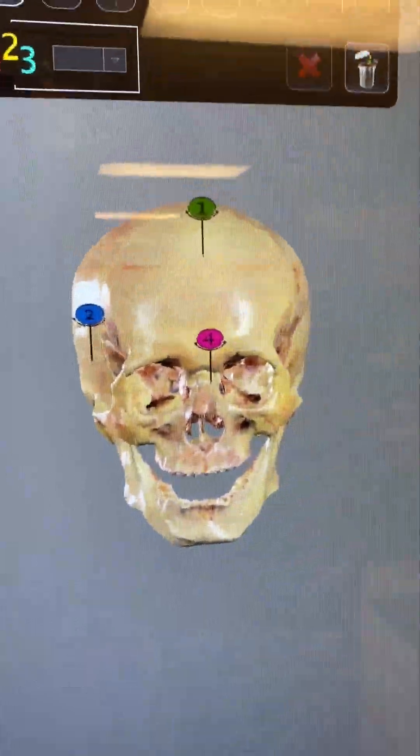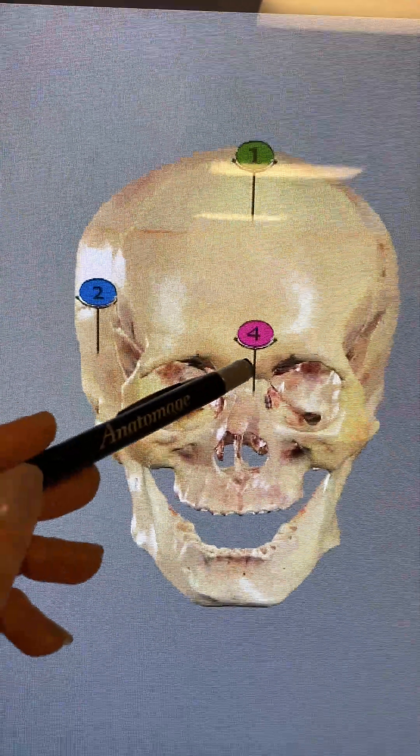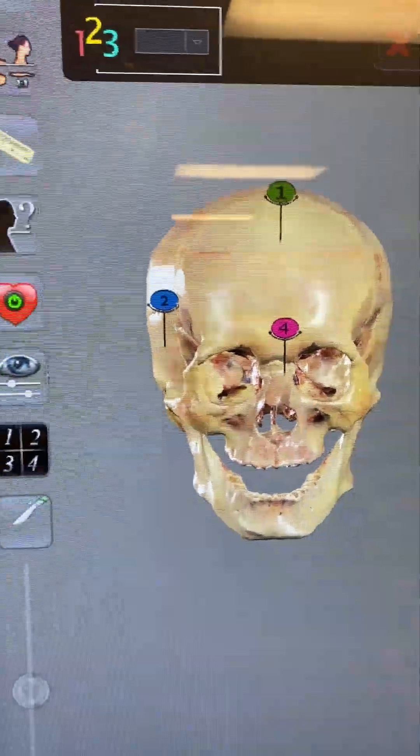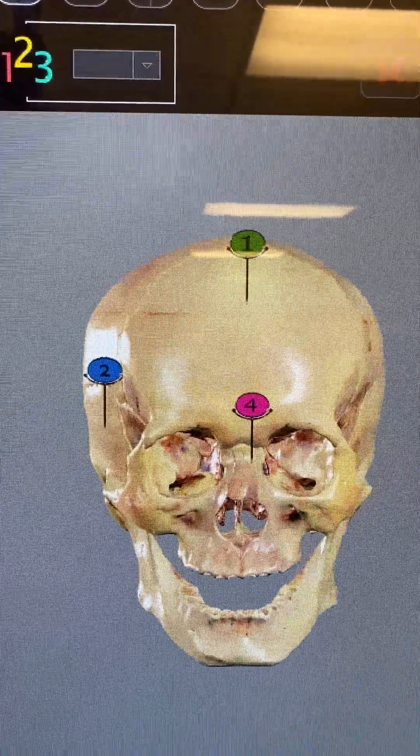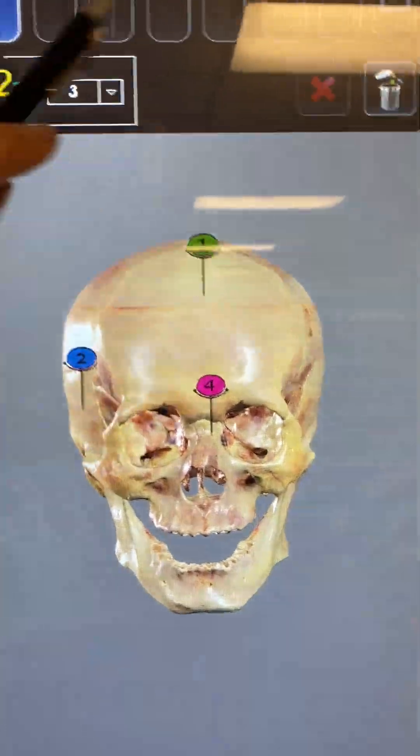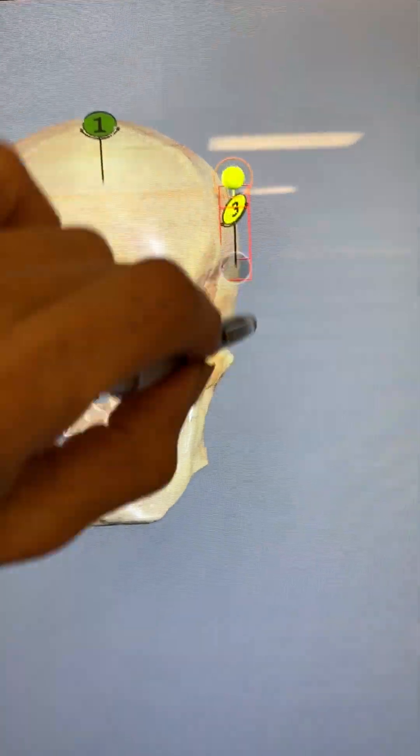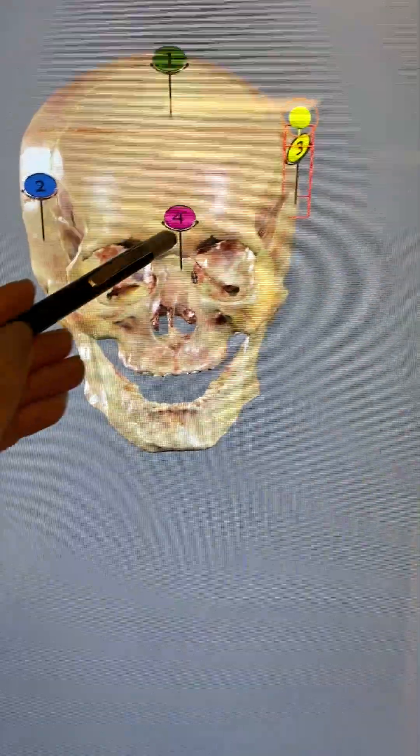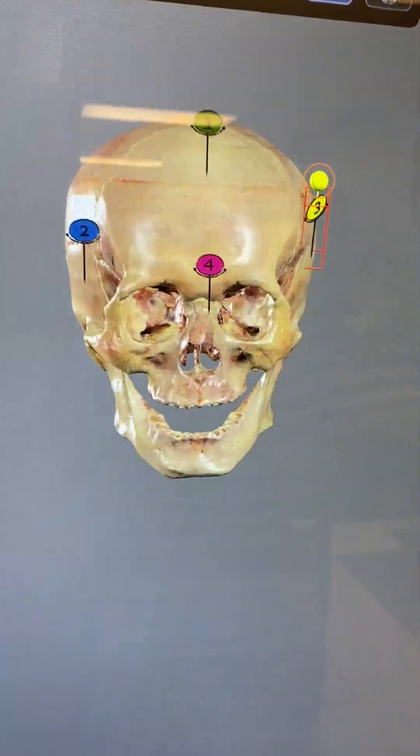The one I removed is number three, so it has one, two, and four. Automatically, if you add the next pin—again, I'm highlighting here to add the next pin—you see this jumps to number three. It comes to the next number. It wouldn't be number five; it would be the number you already removed.